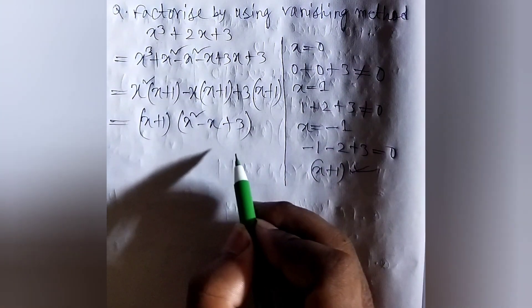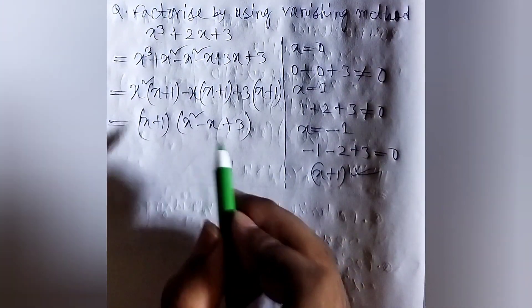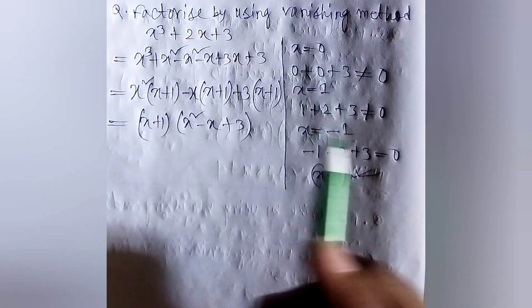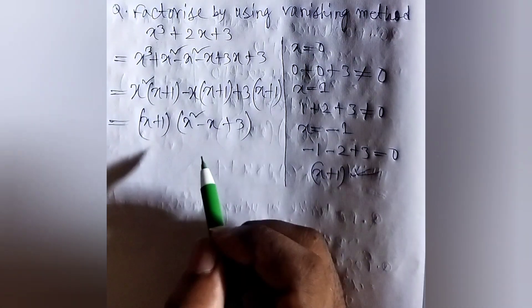So, this is the answer. And this is the process of how we do vanishing method and cubic factorization.